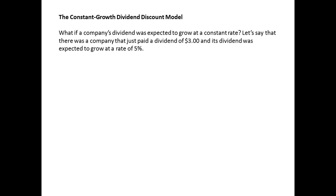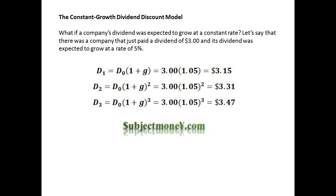The Constant Growth Dividend Discount Model: What if a company's dividend was expected to grow at a constant rate? Let's say that there was a company that just paid a dividend of $3 and its dividend was expected to grow at a rate of 5%. If this were the case, the dividend in one year would be $3.15, and the year 2 dividend would be $3.31, and then the year 3 dividend would be $3.47.